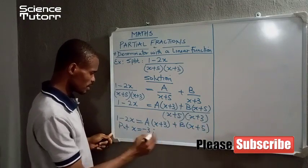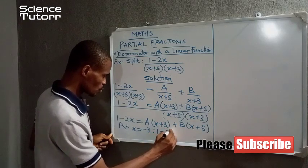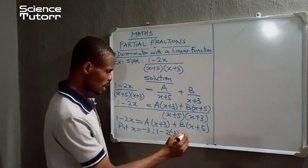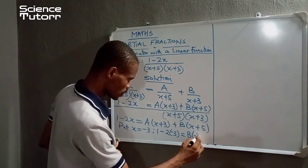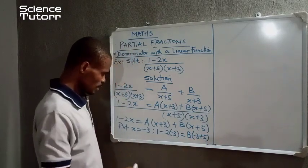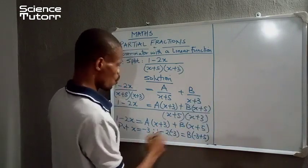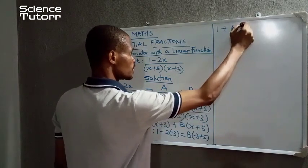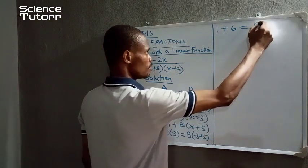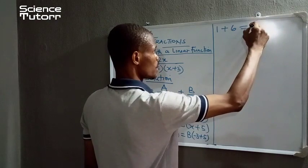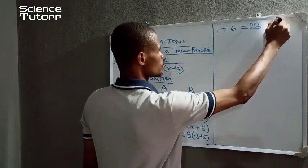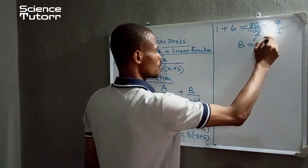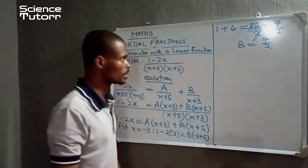So when x is minus 3, we have 1 minus 2 into minus 3. So we are left with B into (minus 3 plus 5). So on this side, we have 1 minus times minus is a plus. So we have 2B. So 2B is equal to 7. So that makes B to be equal to 7 over 2.